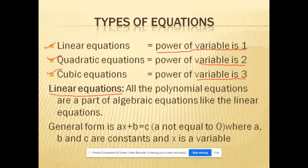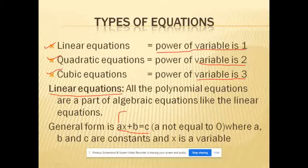All polynomial equations are a part of algebraic equations, like linear equations. The general form of a linear equation is ax + B = C, where a is the coefficient of x, B is the variable, and C is the constant term.